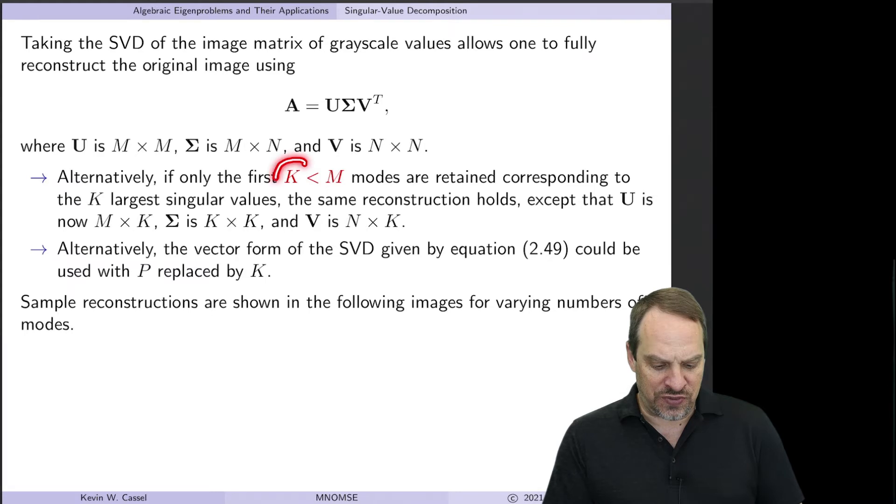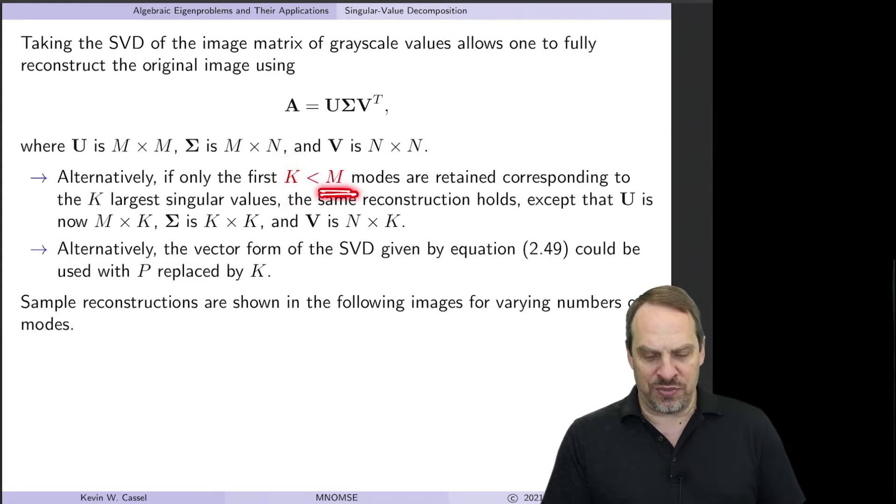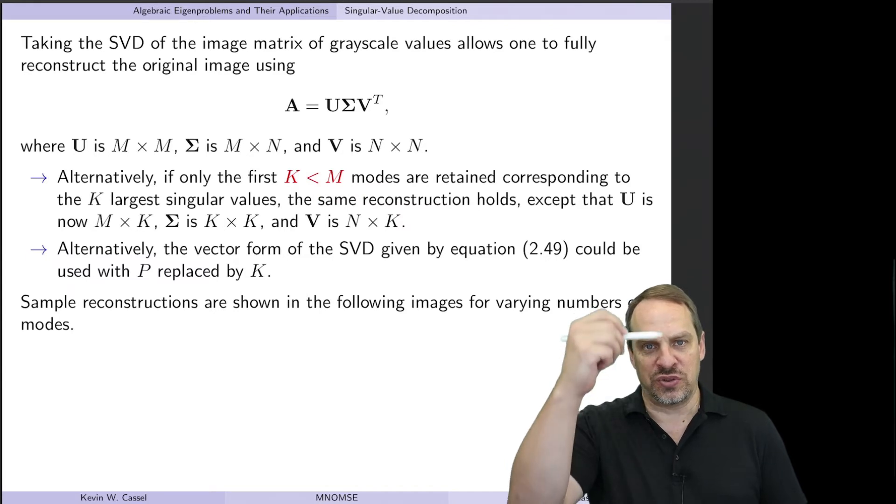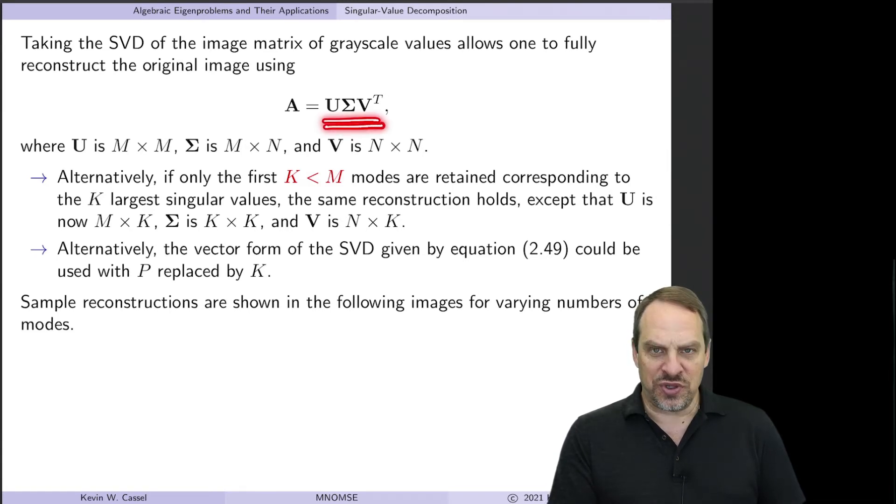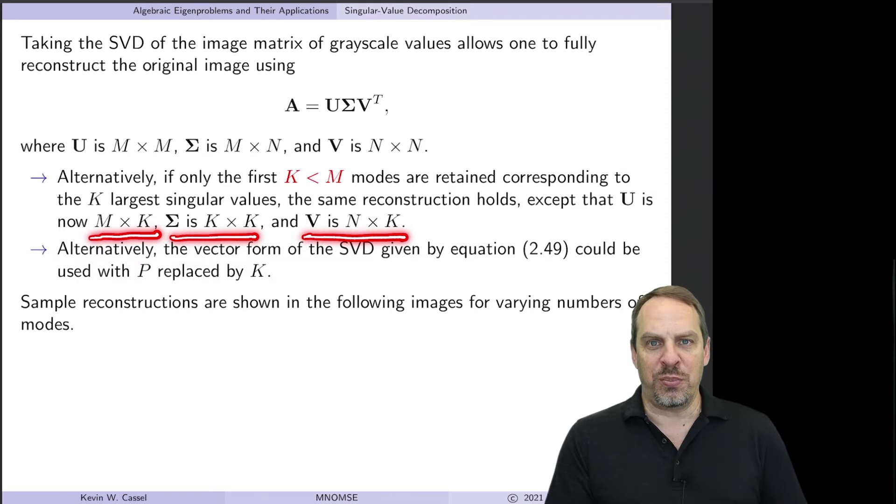We're going to choose a number capital K, something less than M. So M is the number of pixels along the vertical, and we're going to choose capital K that is less than M, and that's going to be how much data is being reduced. If we think of the SVD in terms of the matrix approach, the U will be M by K, sigma will be K by K, and V will be N by K.